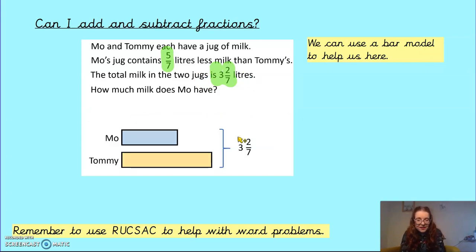Okay, so I've represented it using a bar model here to help me. I know that Moe has less than Tommy, so Tommy has the greater bar, and that all together there are 3 litres and 2 7ths in the whole thing. So what can I do now? Have a think.